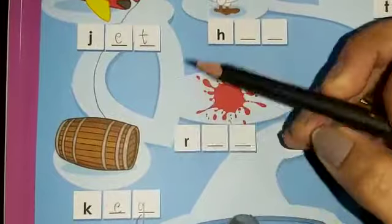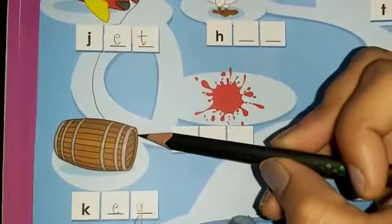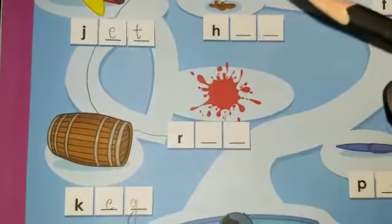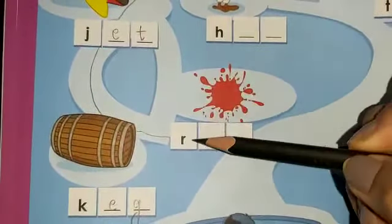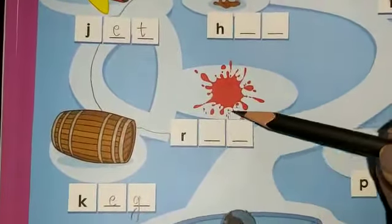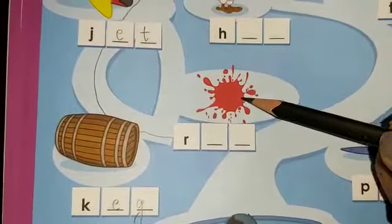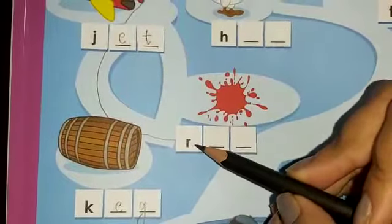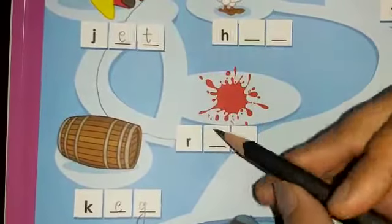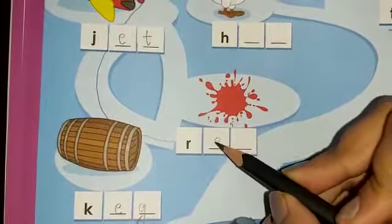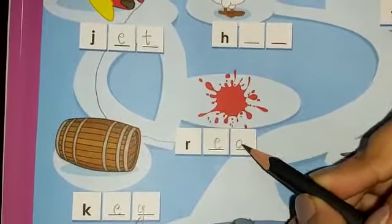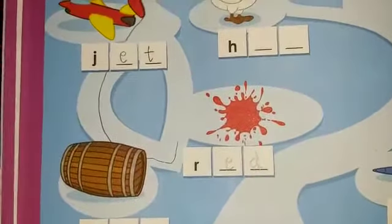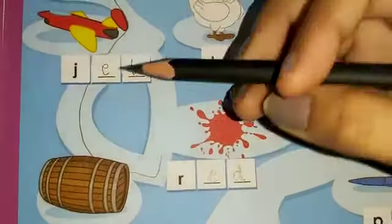From keg, we move further. Where do we reach? This is red, colour red. So we are going to write down R-E-D, E-D, red.